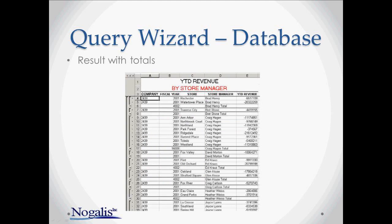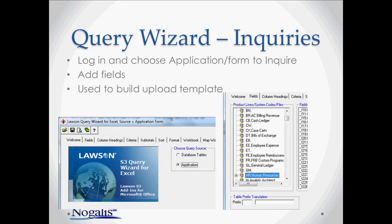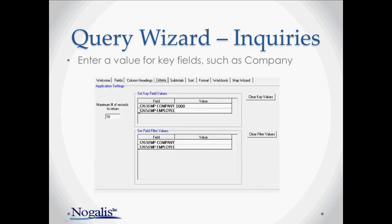That is the last slide for the query wizard against the database. The next section covers using the query wizard against the application instead of the tables. We mentioned earlier that the query wizard that does inquiries against the application is typically used to build an output template. Similar to the database query wizard, we'll walk through the wizard choosing the form such as HR11 and the fields you want to return. In order to do the inquiry on a form, you need some key fields such as company and employee to do a query against HR11. The criteria tab is much simpler in this case — you just tie a value to each of the key or query criteria. If you want to filter additional values, make sure to add those fields in the previous tab.